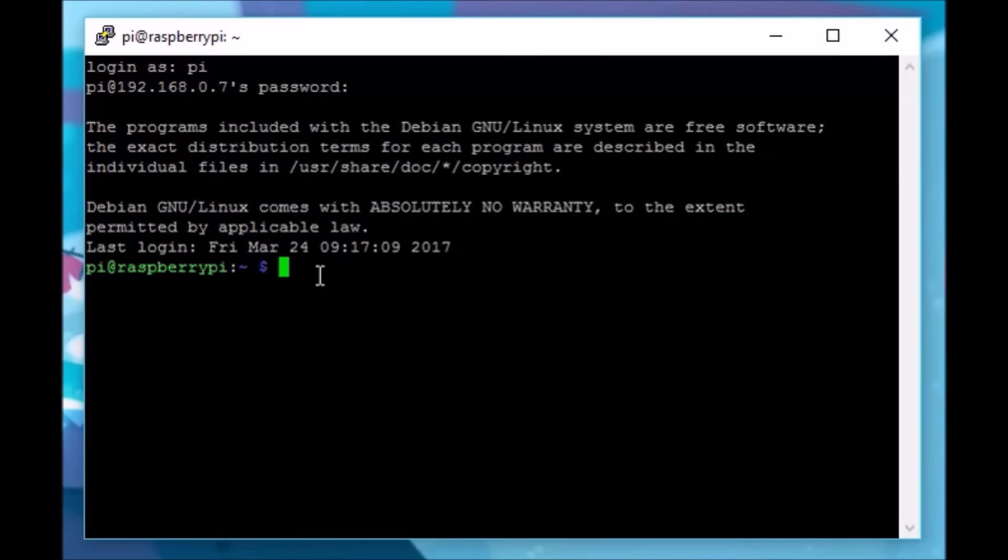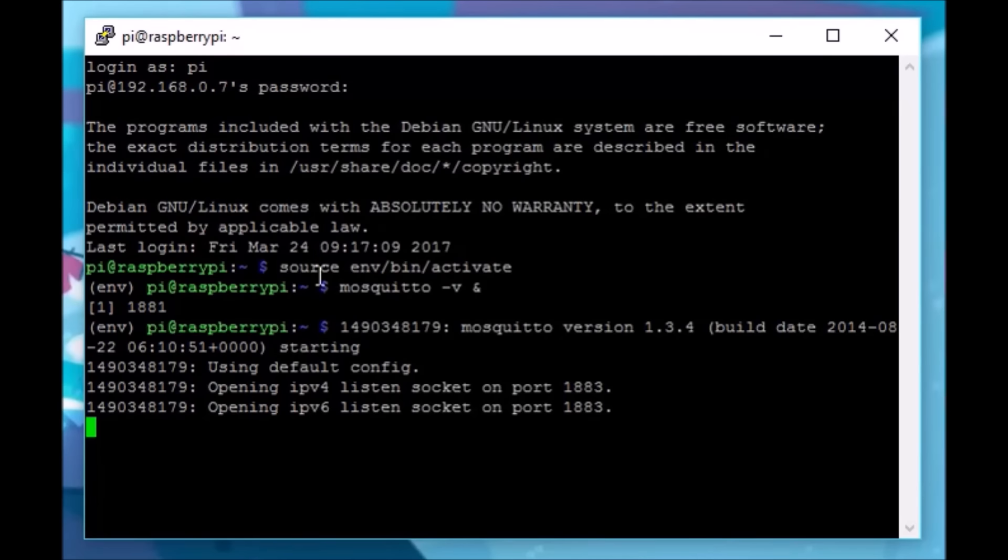Now we've actually logged into the Pi via SSH. Obviously use your own IP address and password and login and change it from raspberry. Don't just go with the default. You probably aren't going to have to do this but my Python modules are just such a mess that the only way I can manage them is by using a virtual environment. So for me, I'm going to have to start that up now. Now I want to start Mosquitto as a broker in the background and I'll put it in verbose mode. There we go.